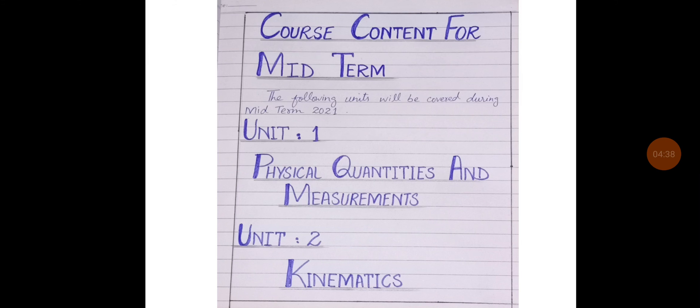Look at the screen carefully. The course content for midterm. Write this heading properly and neatly in block letters. Don't use small letters for this heading. The following units will be covered during midterm 2021: Unit number 1, physical quantities and measurements and Unit 2, kinematics. So in the midterm, we will cover, inshallah, our two units, first and second.